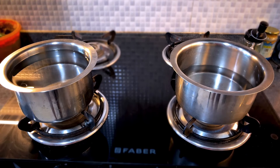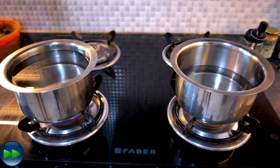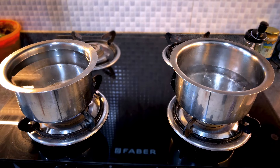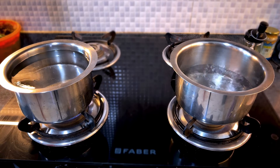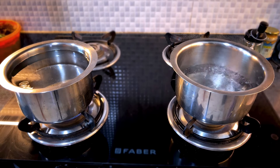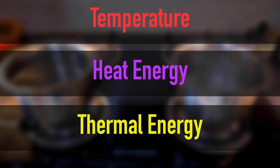I have two vessels of water. I start heating them with pretty much the same amount of heat — similar stoves. What do we find? We find that the one which has less water starts boiling first. That's not really surprising. This means that the one which has less water, its temperature rises quicker and reaches the boiling point of 100 degrees Celsius much quicker than the other one. But the question is why does this happen? To answer this question we need to understand the difference between temperature, heat energy, and thermal energy — and that's exactly what we'll do in this video.